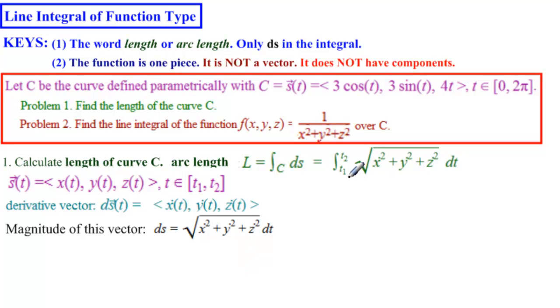So where do we start? We need t₁ and t₂. Here we see that t₁ is equal to zero, and t₂ is equal to 2π. Now we need the derivative vector. The derivative of 3 cosine t is minus 3 sine of t. The derivative of 3 sine of t is 3 cosine of t. And the derivative of 4t is 4.